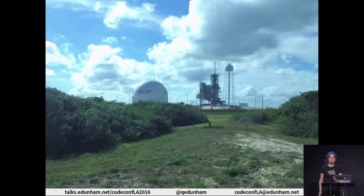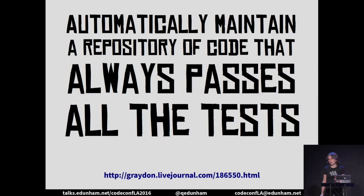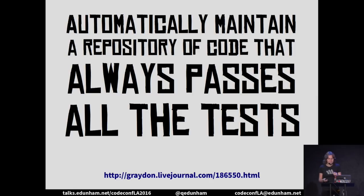Before I tell you about our most important robot, we need to take a quick trip into history. Graydon, the original author of Rust, was a software engineer for many years and came up with what he calls the not rocket science rule of software engineering. It simply says: you should automatically maintain a repository of code that always passes all the tests. This sounds deceptively simple, and it's quite a big culture shift to say we can't merge until we fix the code or fix the tests. Fortunately, we have a bot to help us enforce this.